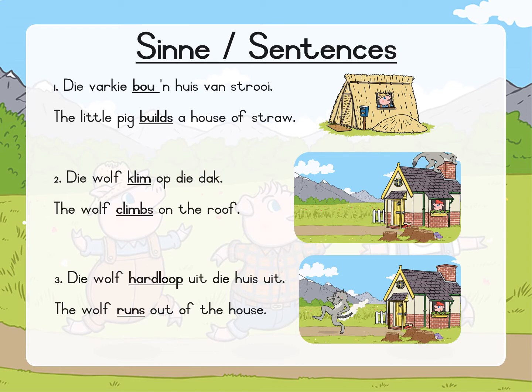Nommer 1. Die varkie bou 'n huis van strooi. The little pig builds a house of straw. Ask yourself the question — what is the little pig doing? Vra jouself: Wat doen die varkie? Yes, that's right. The little pig builds. Die varkie bou. That means bou is die werkwoord. Builds is the verb.